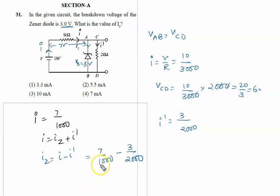So finally we will solve it. It is 7, so it is 2, so multiply by 2, it will be 14. 14 minus 3, that is 11 upon 2000. So 11 by 2, that is 5.5. The right answer will be 5.5 mA. Option 2 is the correct answer of this problem.